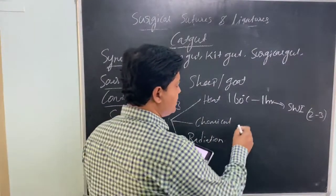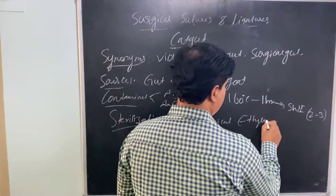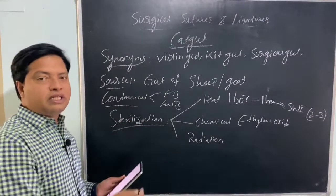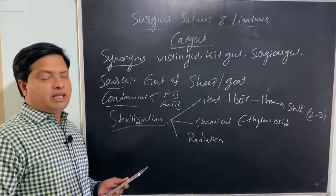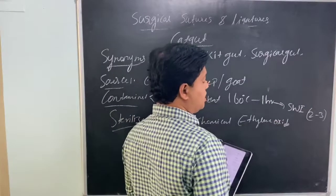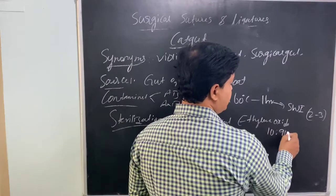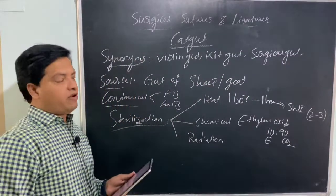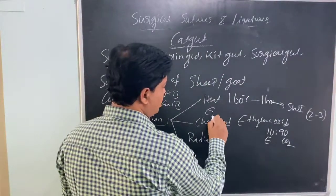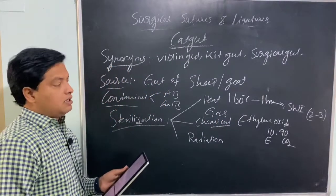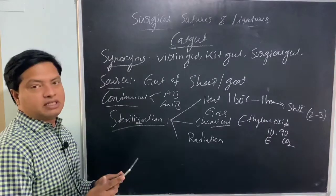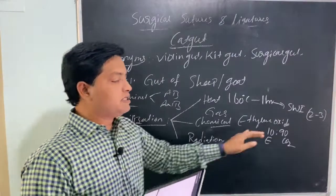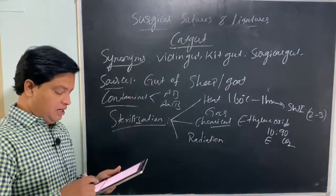Chemical treatment uses ethylene oxide. This can also be called gas treatment. However, ethylene oxide is flammable, so you use a 10:90 ratio — 10% ethylene oxide and 90% CO2 mixture. This mixture is not as flammable as 100% ethylene oxide, so you can sterilize safely by this method.